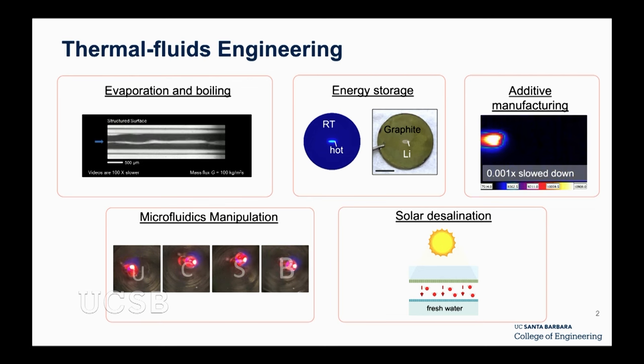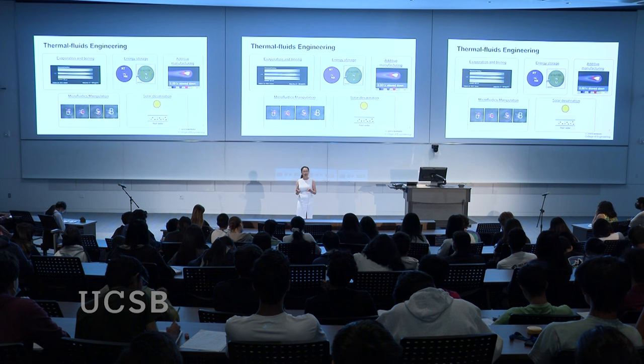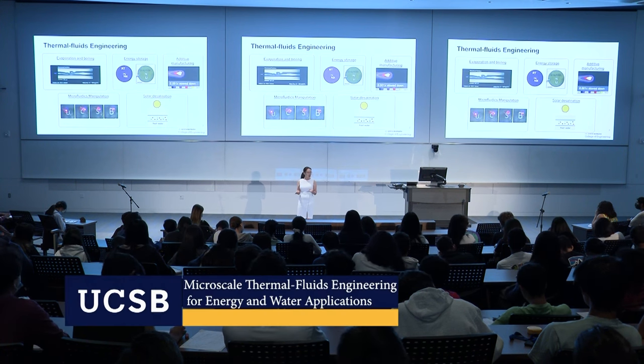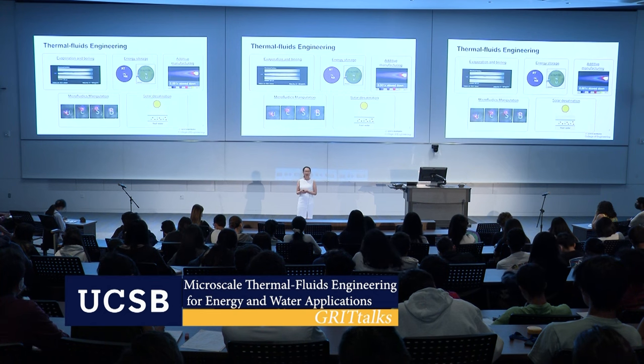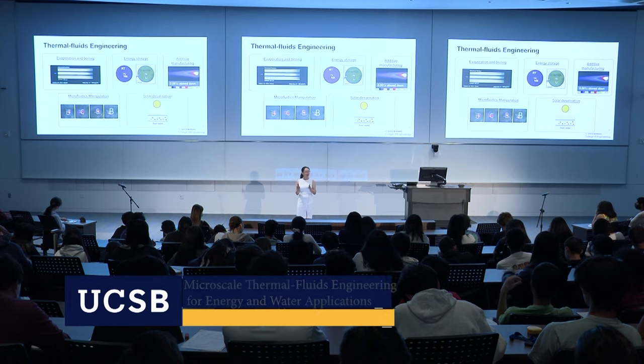Think about your cell phone getting super hot, and laptops getting hot. You need to keep them cool. Electronics need to stay cool. When you have cell phones, batteries, and also electric vehicles using batteries, you have to keep those batteries in a room-temperature window to run them safely. If the batteries overheat they can explode, and if operating in very cold temperatures you cannot charge or discharge them.